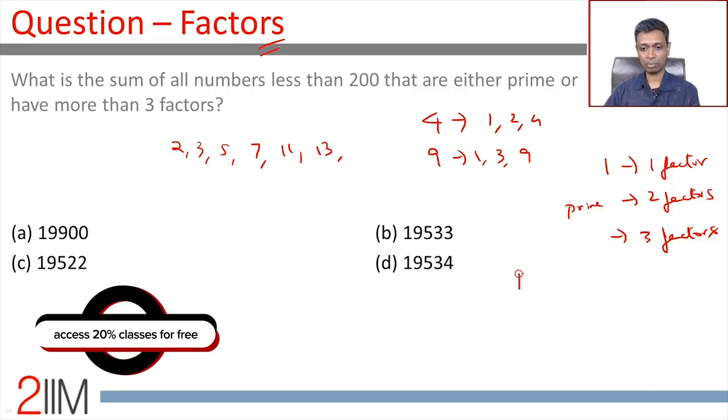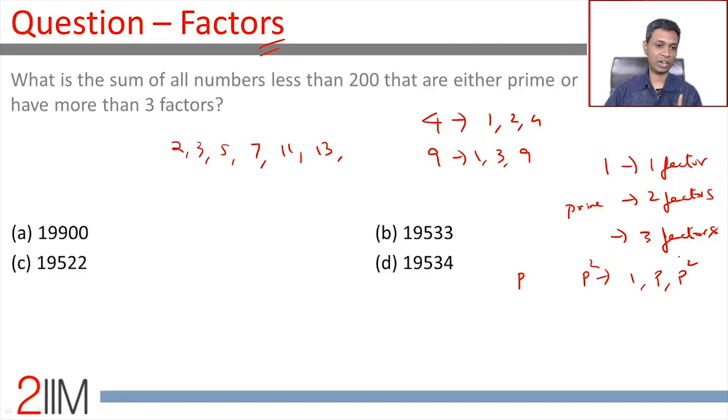If you have a prime number p, p square will have three factors: 1, p, and p square. No other number will have three factors. So what is the sum of all numbers less than 200 that are either prime or have more than three factors?